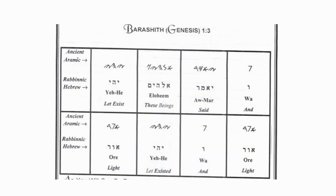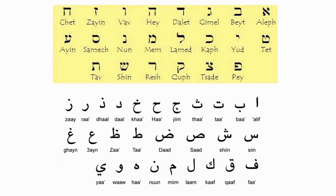This is another diagram — I think this is out of the Torah — of ancient Aramaic, and it shows rabbinic Hebrew. Now we get into modern Hebrew on the top, and modern Arabic on the bottom. Everybody's familiar with this.